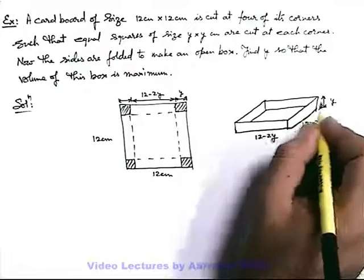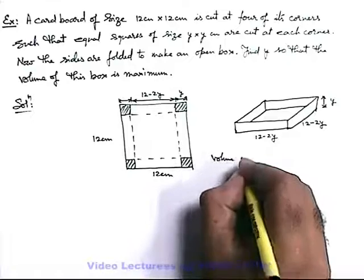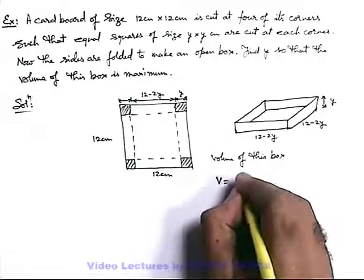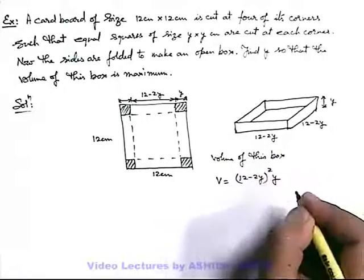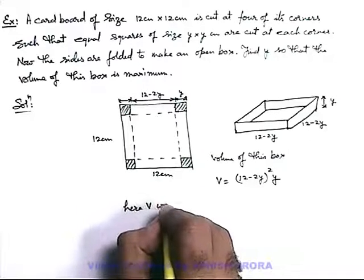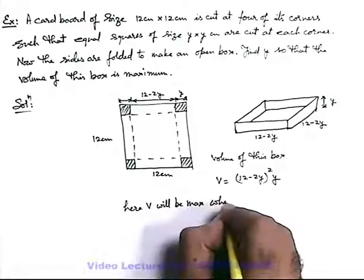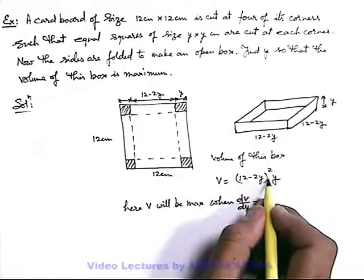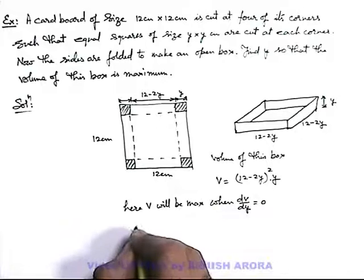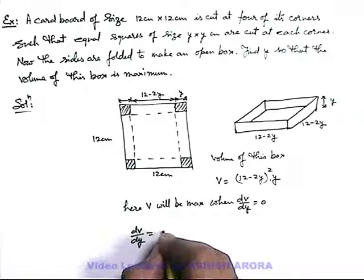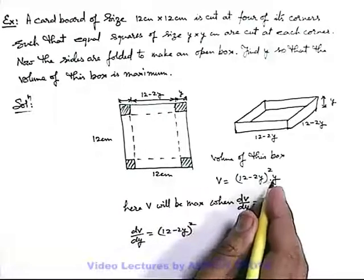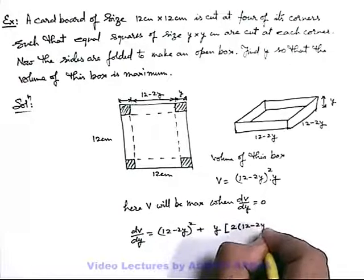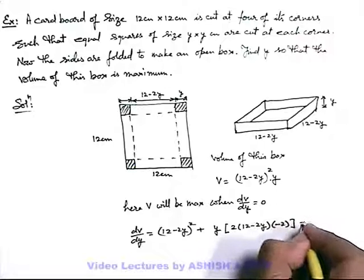We are required to find the value of y so that the volume of this box is maximum. The volume is base area multiplied by height, which gives (12 minus 2y) squared times y. V will be maximum when dV over dy is equal to zero. Differentiating using the product rule: dV over dy equals (12 minus 2y) squared times 1, plus y times 2(12 minus 2y) times minus 2, set equal to zero.